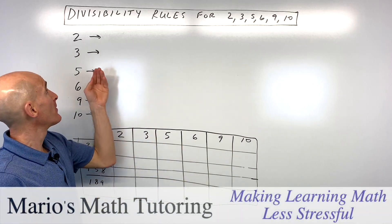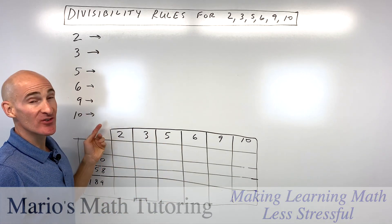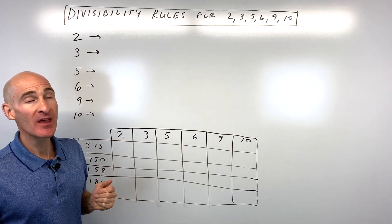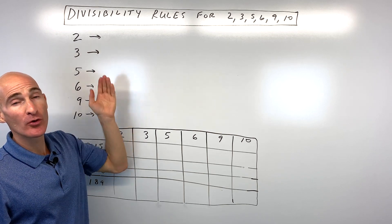So how do we know if a number is divisible by 2, or 3, or 5, or 6, or 9, or 10? Well, let's start with 2 first.